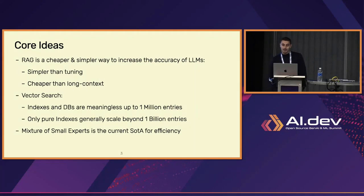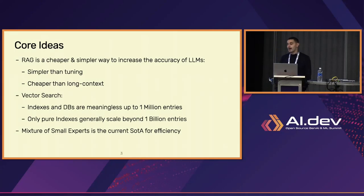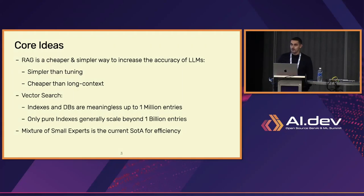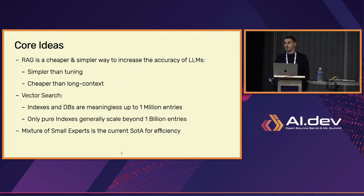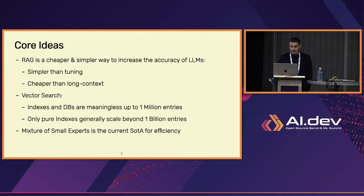As for vector search, indexes or databases are predominantly used for scale below one million entries. At that level, you probably don't need any of those — you just need to do math really fast. Even on a single CPU core, you can do search within less than 100 milliseconds. And if you're really serious about scale, you probably just need the raw index, because using a database at billion or trillion scale might be very expensive. On the LLM side, I'll show some interesting models you can use to build a mixture-of-experts system.